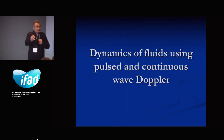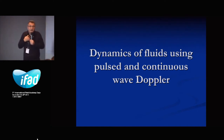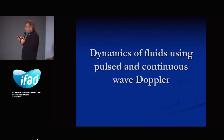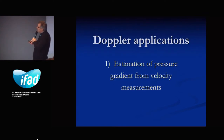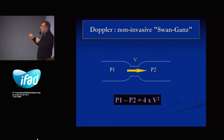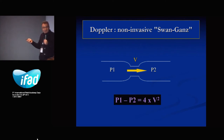When you use pulsed Doppler and continuous wave Doppler, it is not only to obtain a velocity. The key concept is this: the velocity of the flow between two cavities depends only on the pressure gradient between those two cavities. So you can calculate the pressure gradient by assessing the velocity of the flow.